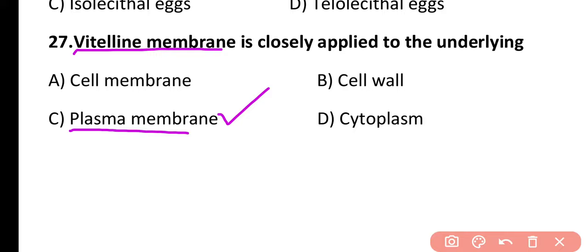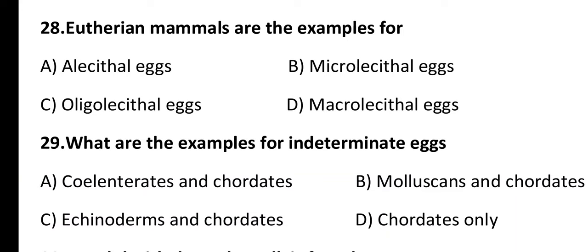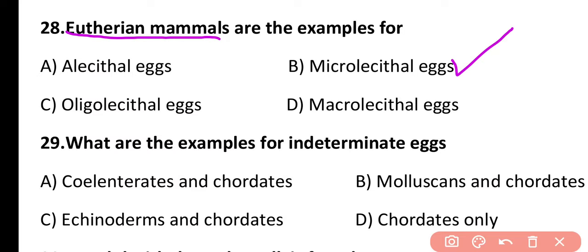Question 28. Eutherian mammals are examples of alecithal eggs, microlecithal eggs, oligolecithal eggs, or macrolecithal eggs? The correct answer is option B. Eutherian mammals have a small amount of yolk in their eggs, so their eggs are known as microlecithal eggs.